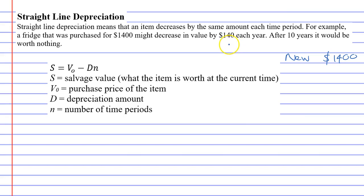Let's say it decreases by $140 each year. So, one year later, what will this fridge be worth? Well, we'll take the original price, $1,400, and it decreases by $140 each time. $1,400 minus $140 is $1,260. So if you wanted to sell it one year later, you should get around that much.